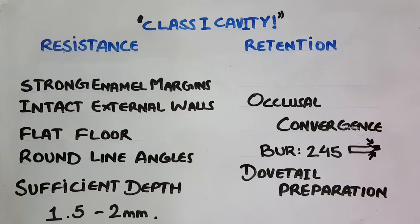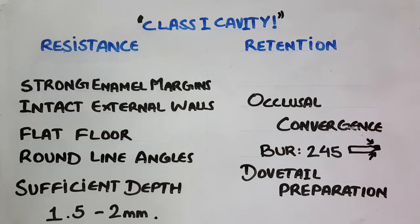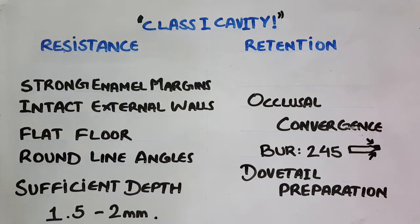Class 1 cavity preparation is one of the most basic tooth preparations in the practice of general dentistry. It is employed whenever there is a case of pits and fissure caries on the occlusal surface of the teeth. This classification was given by GV Black, who gave us five different classes of cavities, with a sixth class added later, and this classification is used worldwide.